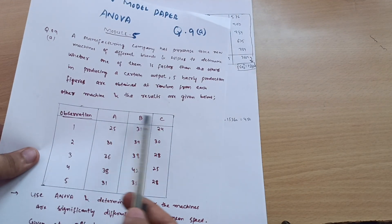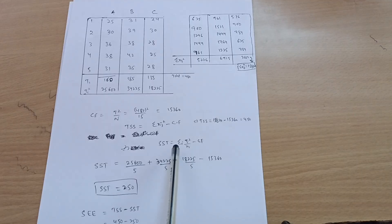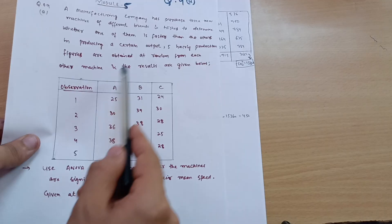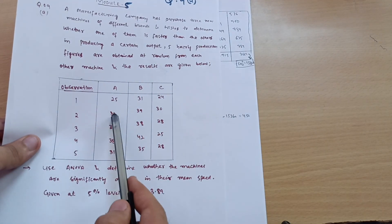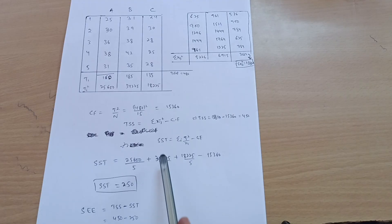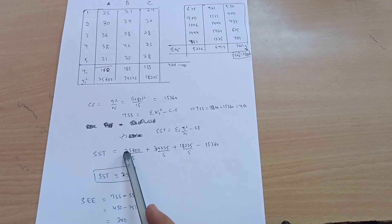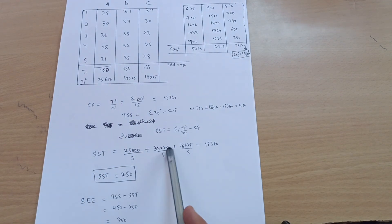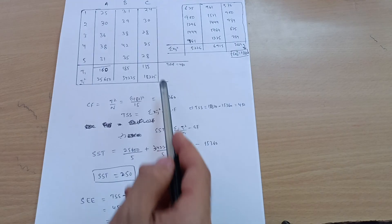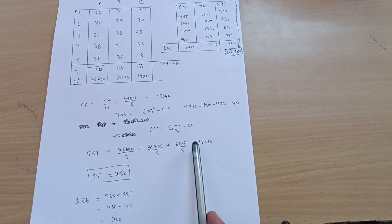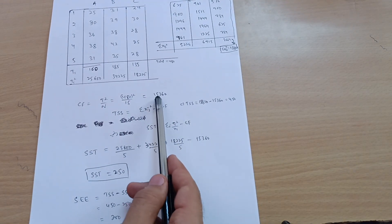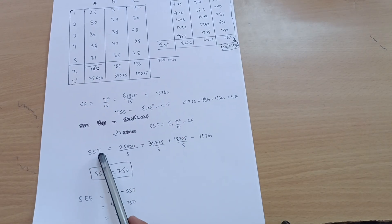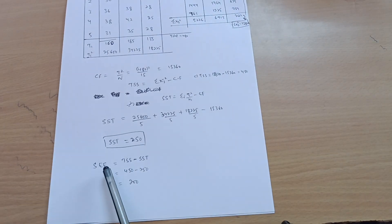Each group has ni = 5 observations. So SST = (25600/5) + (34225/5) + (18225/5) − 15360. Calculating this gives SST = 250.